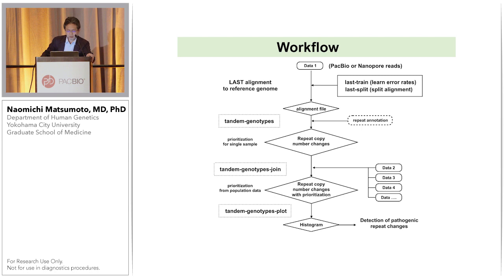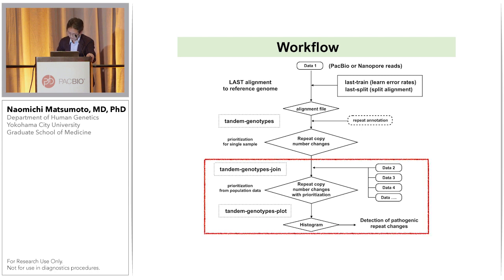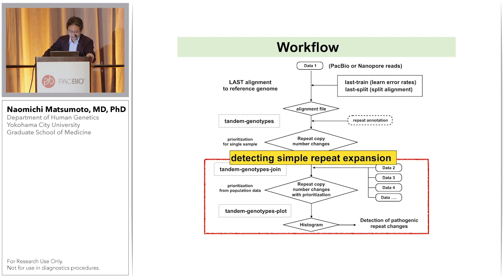This is the workflow of Tandem Genotype: basically LAST alignment to the reference genome, then Tandem Genotype analysis. Using control data, we can narrow down repeat copy number changes with prioritization, and the Tandem Genotype plot makes a histogram to clearly show which one is likely to be expanded.